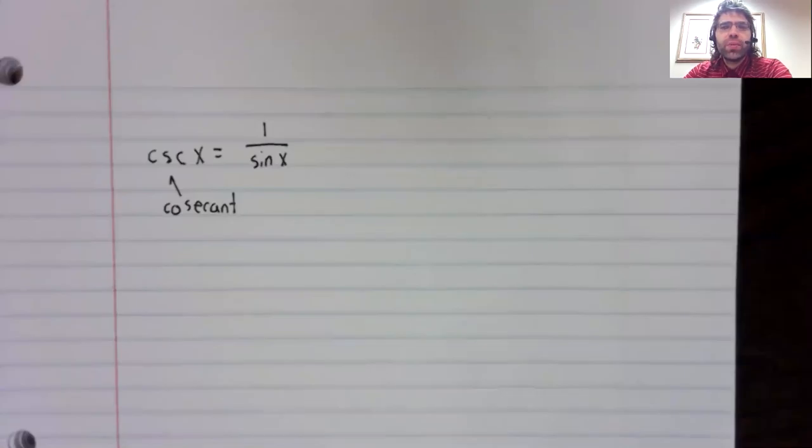When you memorize these, notice that the cos do not go together. That is to say, you might think the cosecant would be one divided by the cosine, but that is not the case. The cosecant is one divided by the sine.